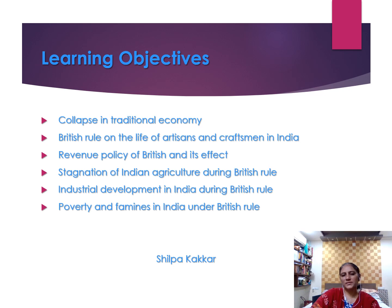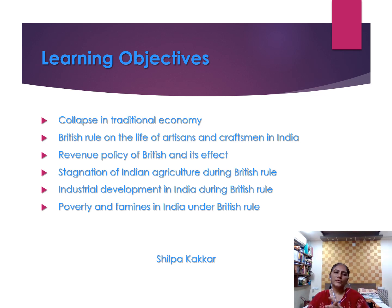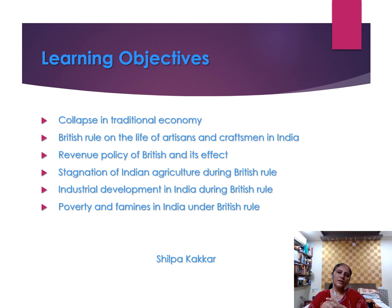Learning Objectives of this lesson: Here we learn about how the traditional economy of India collapsed, how the life of the artisans and craftsmen in India was ruined due to British rule, the revenue policy adopted by the British and its effects, stagnation in the field of agriculture, and industrial development in India during the British rule. Also, poverty and famines.